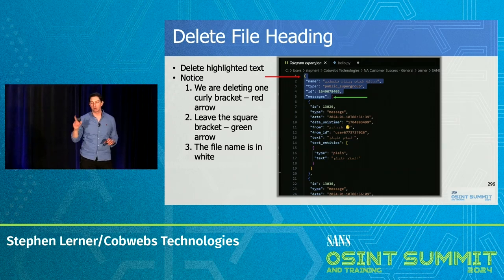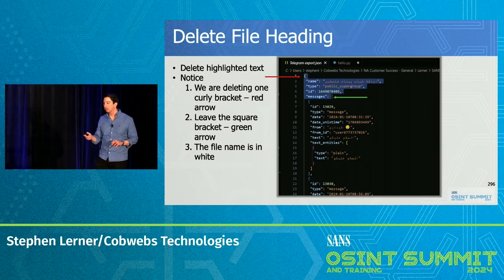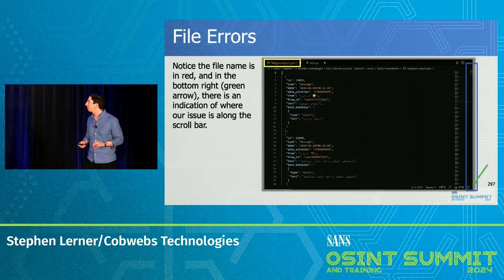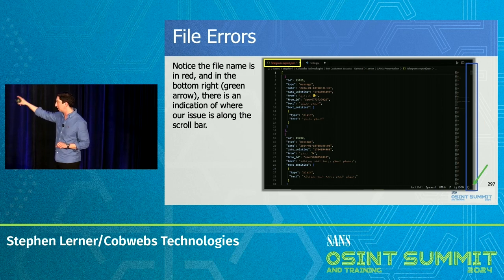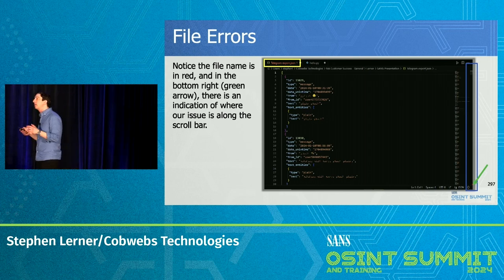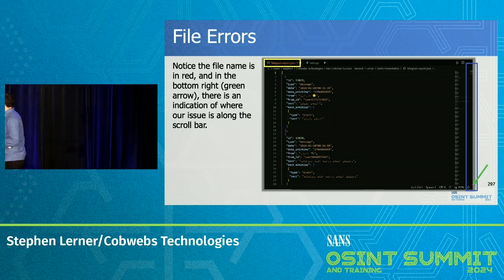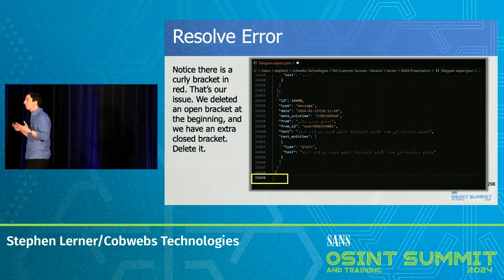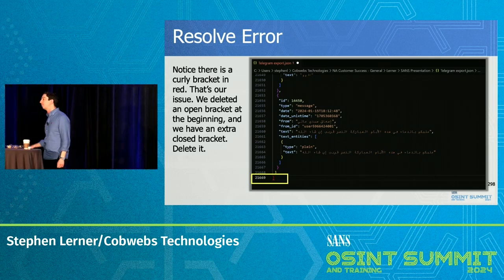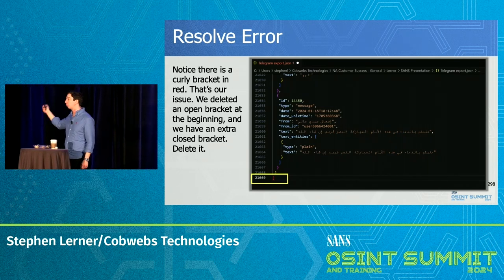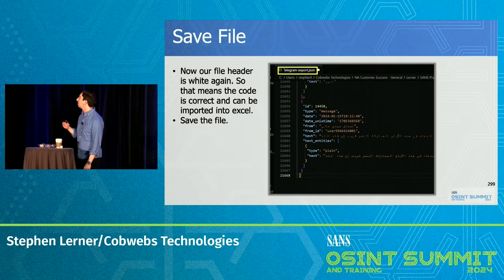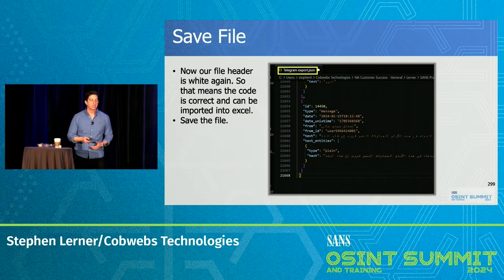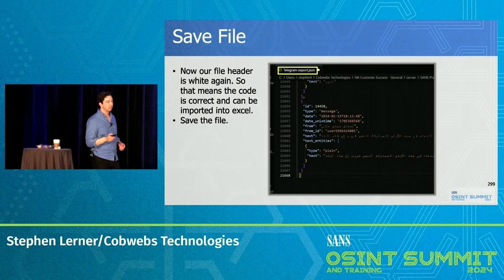To set up the JSON, you need to delete the data highlighted there. Notice we're deleting one curly bracket. The file name is in white — when you delete it, the file name will be in red. At the bottom of the scroll bar there's a red notification pointing to where the error in the file is. We jump down and there's a curly bracket in red. Because we deleted one curly bracket at the beginning, its 'brother is lonely' — we need to delete it as well. Delete the curly bracket and the file name turns white again, meaning it is correct. Save it, and now we can import the JSON into Excel.